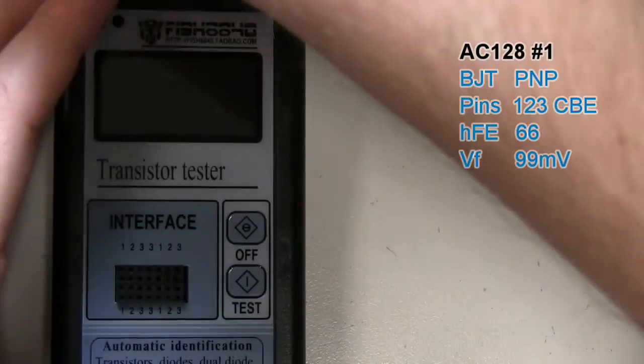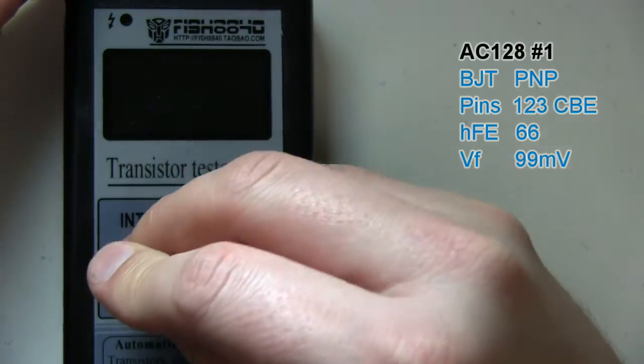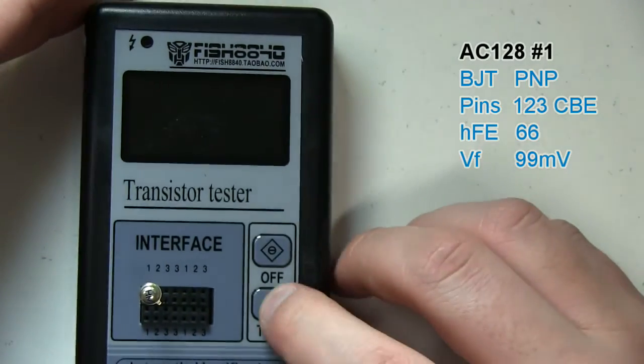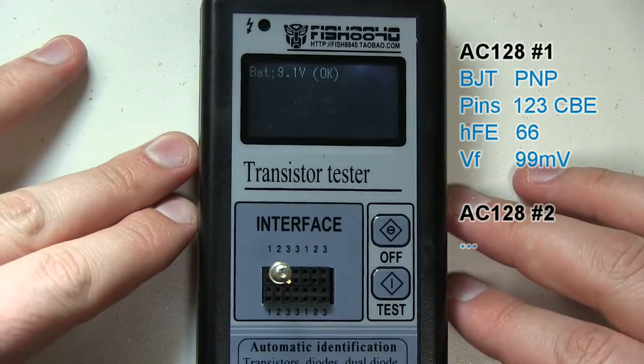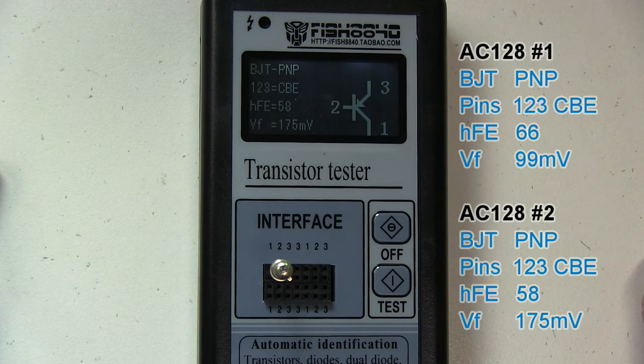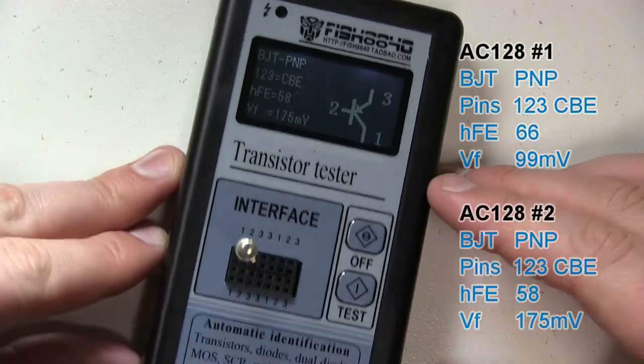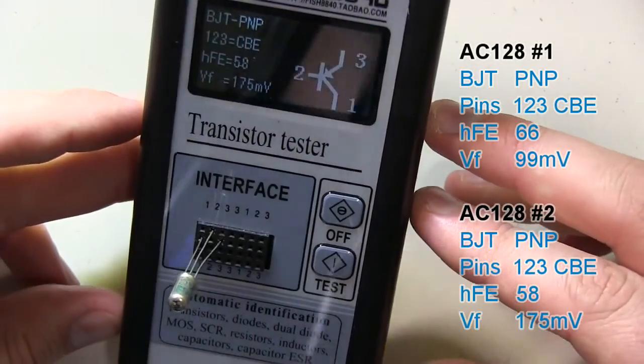I'll plug the next one in now, and see how close these things are together, and see if this one works as well. So there it is. Give it a test. BJT PNP, it's collector base emitter again, one, two, three. HFE of 58, so it is a little bit different. And our VF is also quite different. Again, it is above 45, so this may just be the characteristics of the transistors again, where they're not completely consistent.